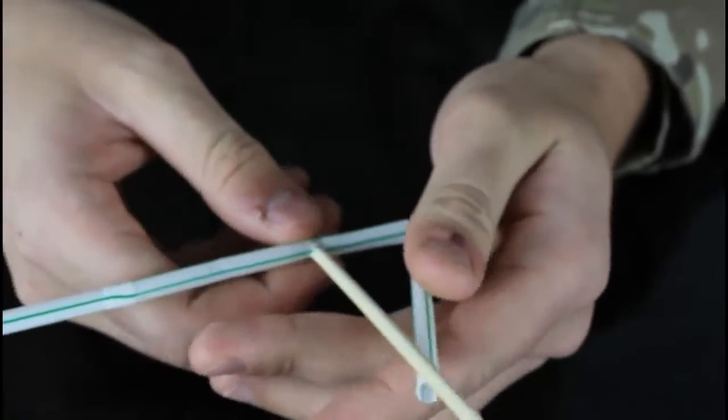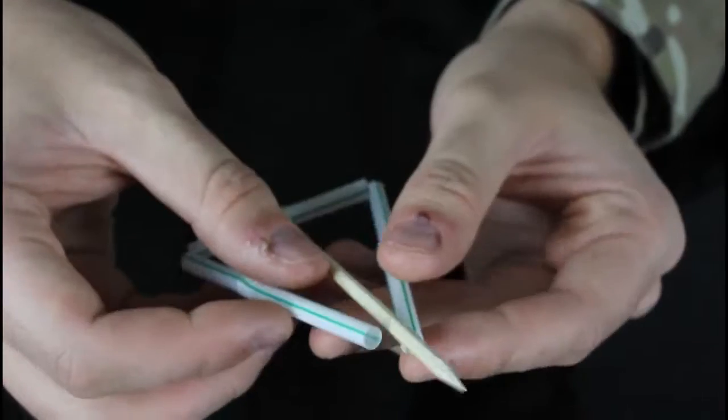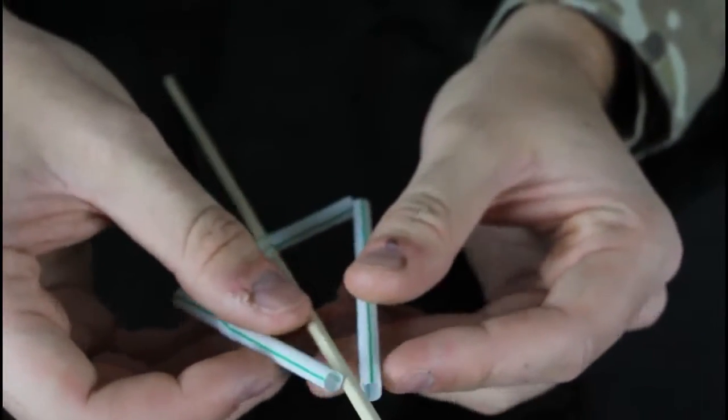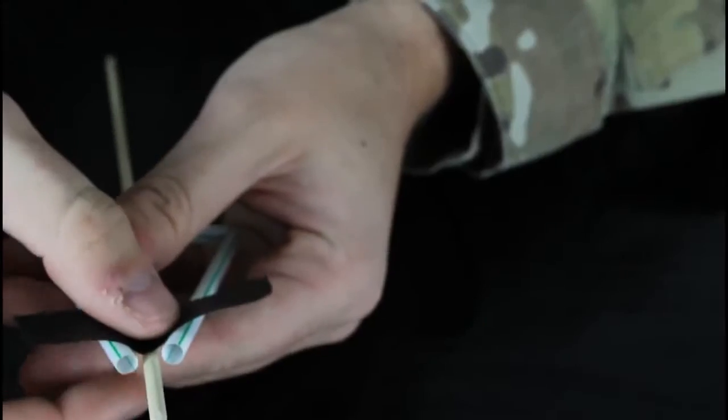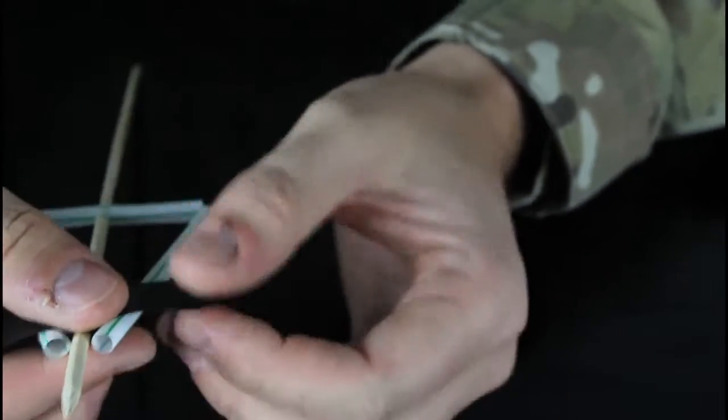Like that, and now we're gonna fold it this way and that way. Oh yeah, forgot about that, we're gonna need electric tape. Alright, grab a small piece of electric tape and just tape all this together like this.